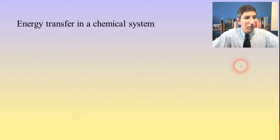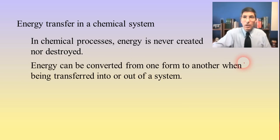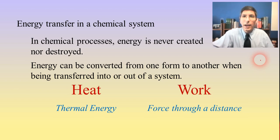We're going to be learning about energy transfers in chemical systems in this course. In a chemical reaction, energy is never created nor destroyed, so we're not going to be worrying about energy created or destroyed. It doesn't happen in chemistry. Energy is transferred. Energy can be converted from one form to another when it's being transferred into or out of a system. And in chemistry, the two types of energy that we are interested in, as far as a chemical system goes, are heat and work.